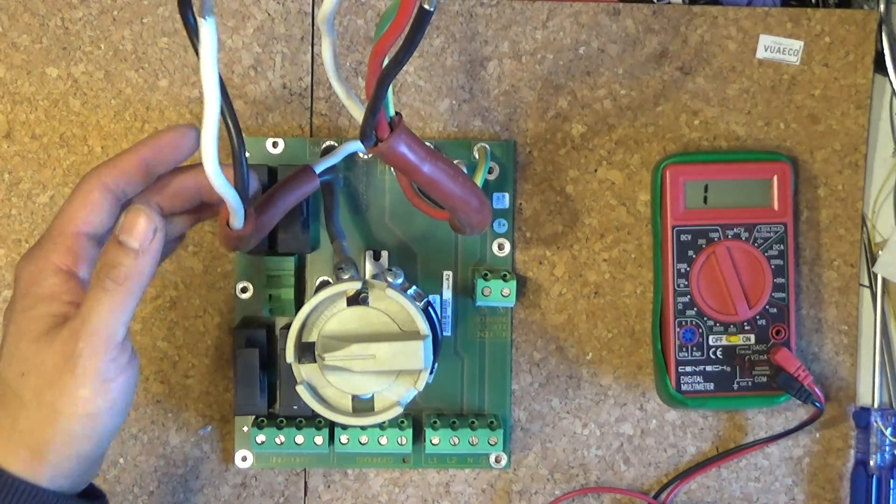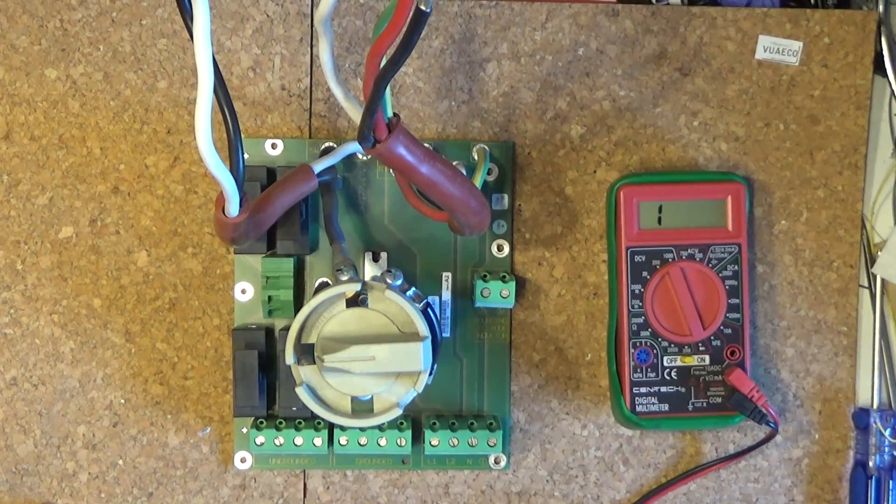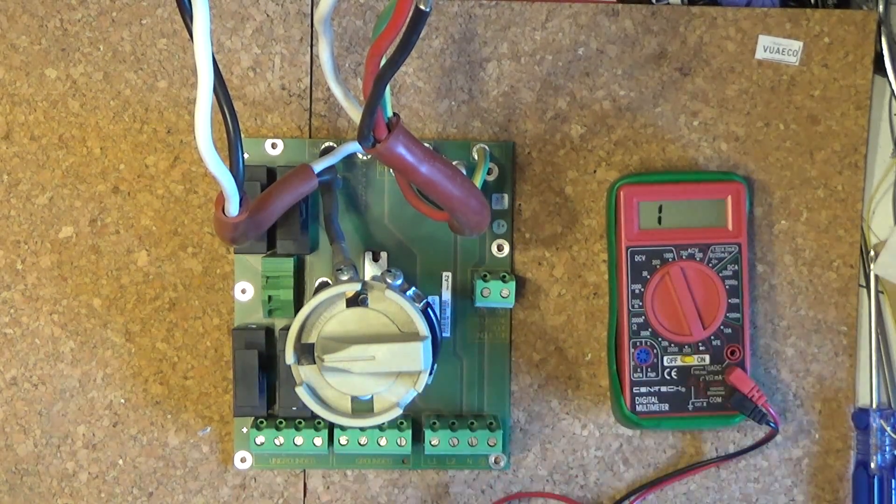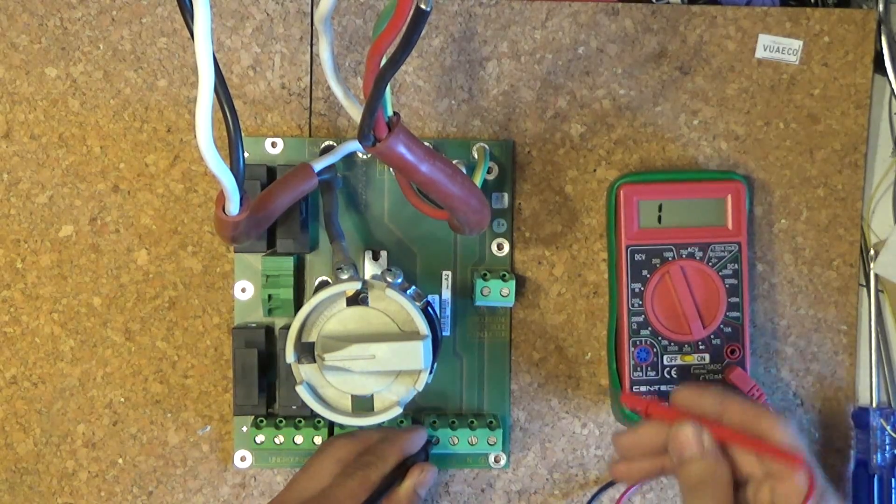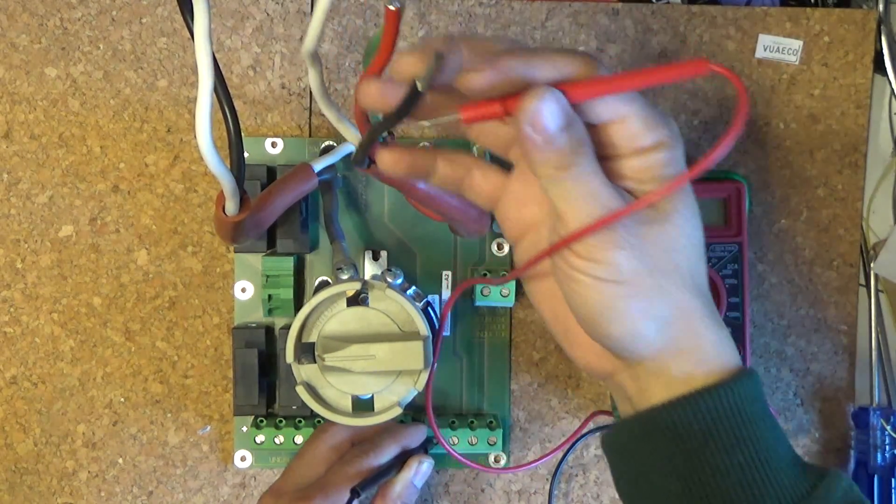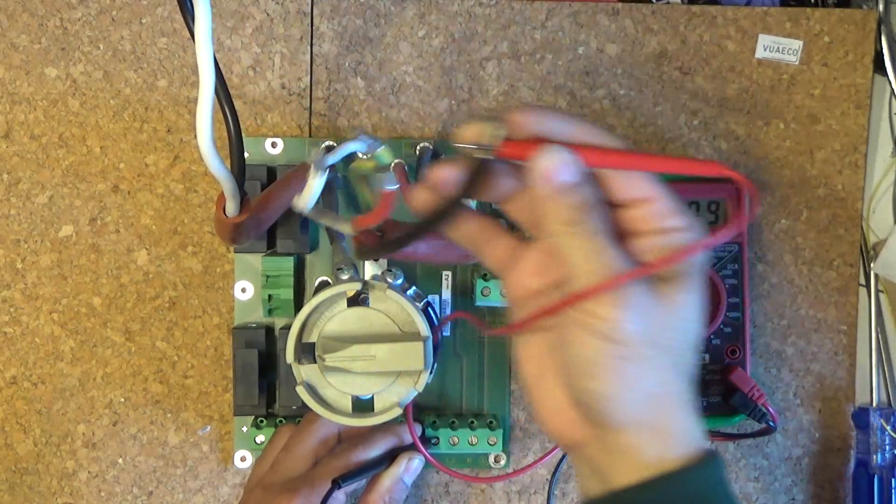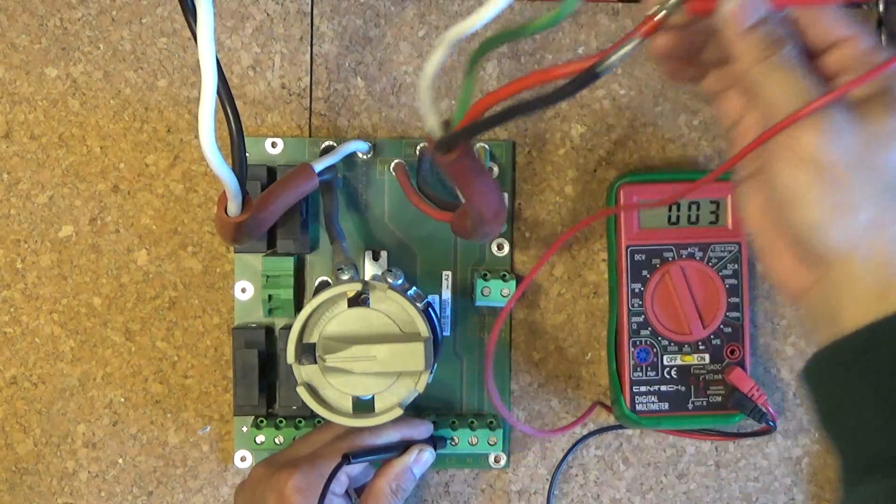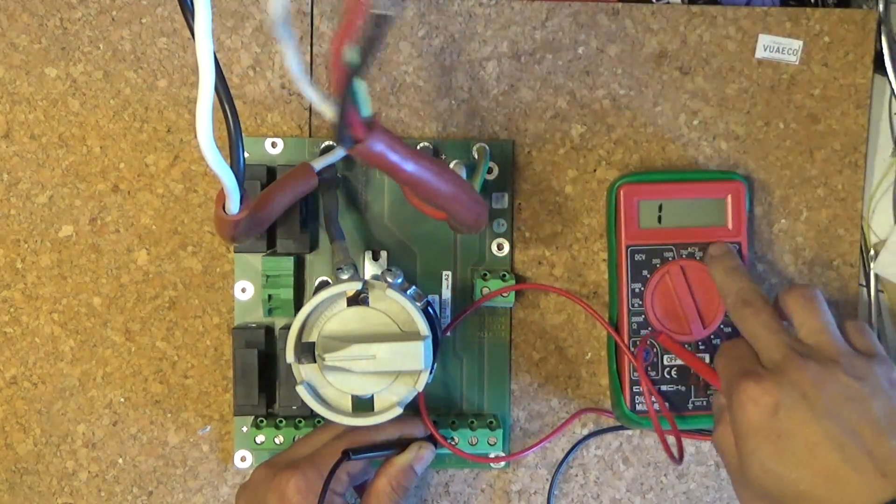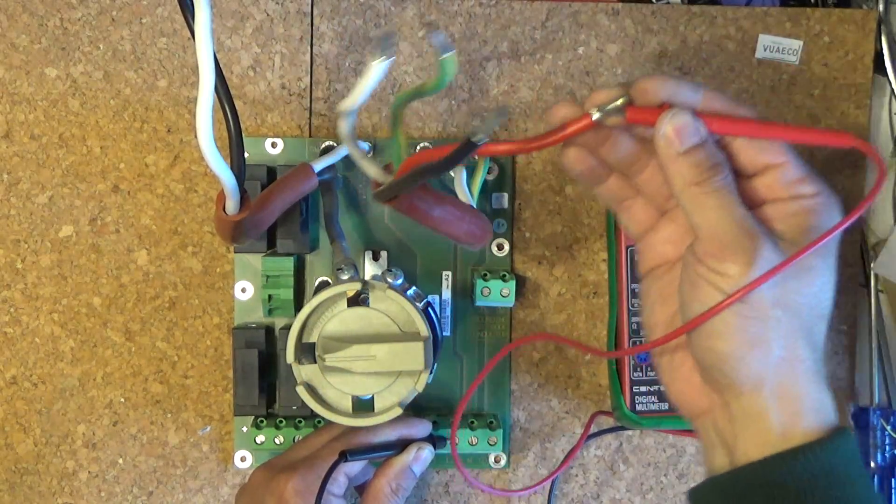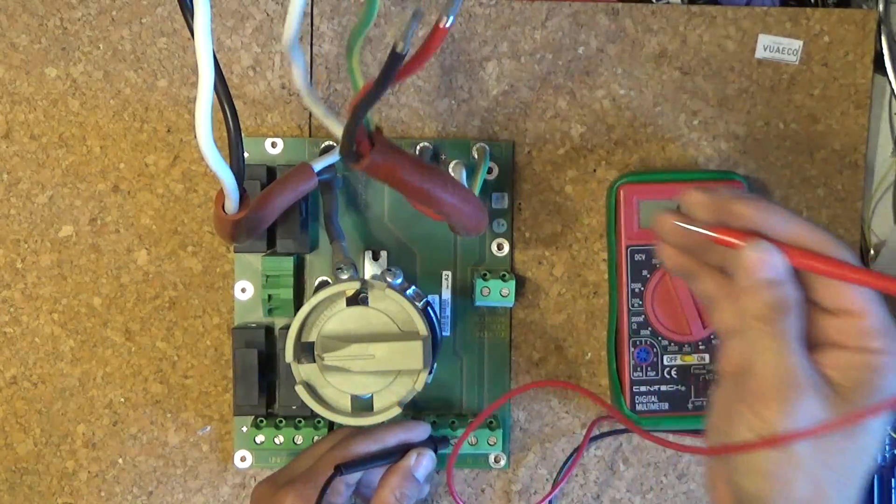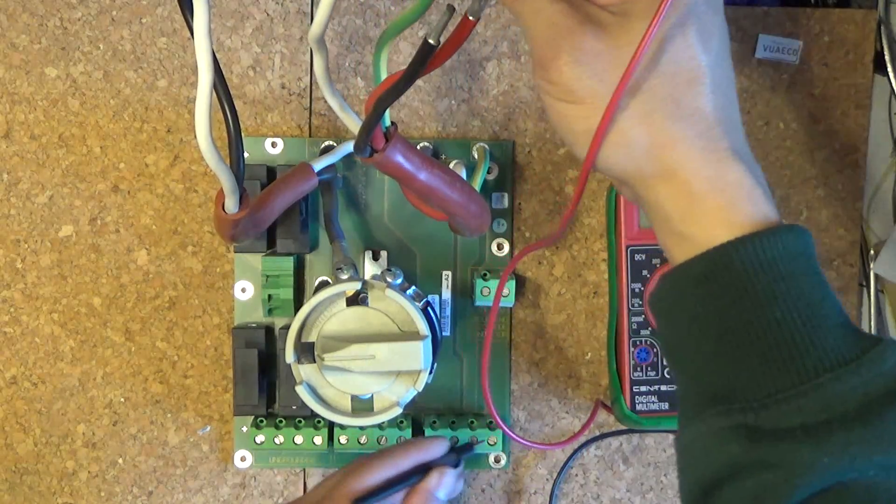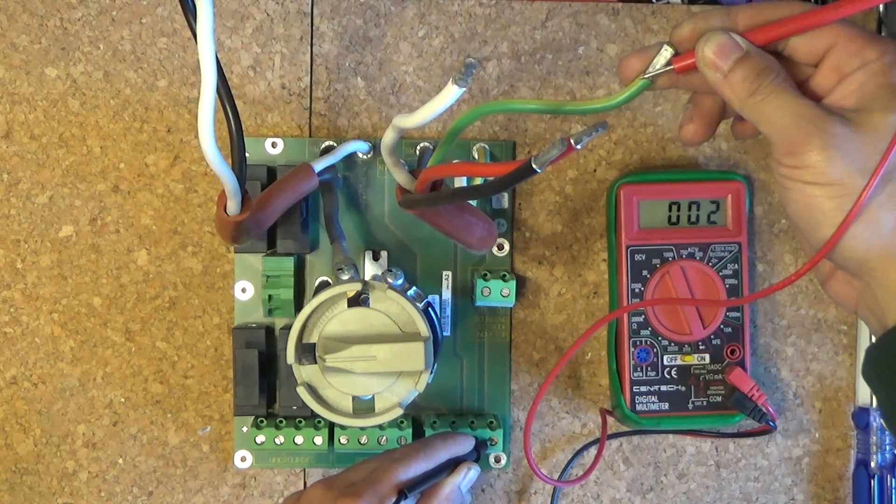So I got my multimeter here to measure conductivity. So if the wires touch, you see the number change. So let me show you all the AC lines being connected. Line one is black. Line two is red. See the number jump. Neutral is white. And ground is green. Here we go.